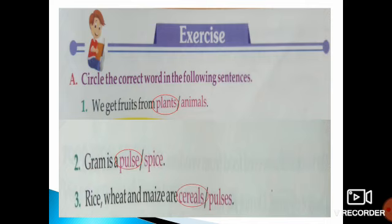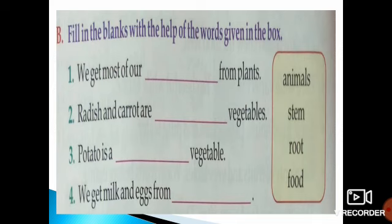Move to Question B: Fill in the blanks with the help of the words given in the box. Number 1 — we get most of our blank from plants. The answer is food. We get our food from plants; every day we take food that comes from plants — those are plant products.